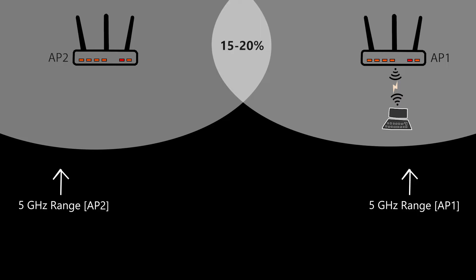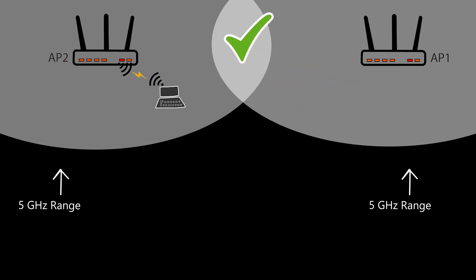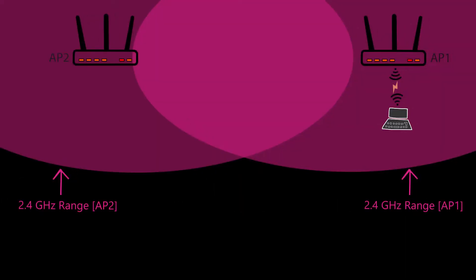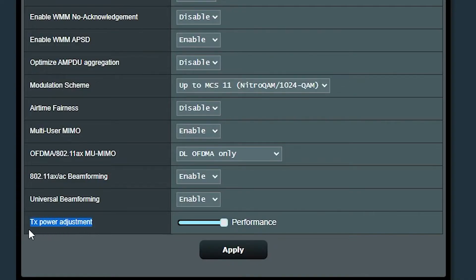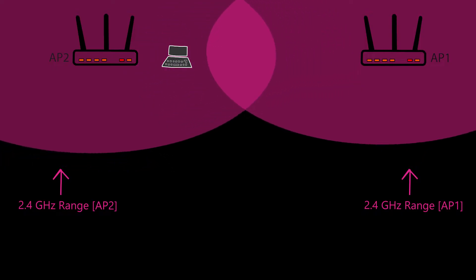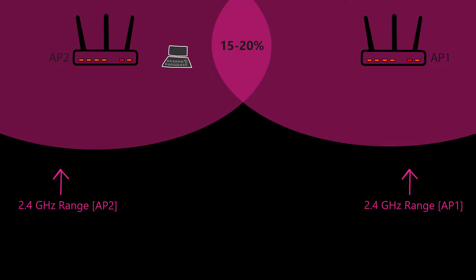Although in this example the 5 GHz wireless networks have a 15 to 20% overlap which seems perfect for seamless roaming, the 2.4 GHz wireless networks are nothing like that and a sticky client issue is very likely to happen. So in this situation, adjusting the transmit power could be helpful — for example, reducing the transmit power for the 2.4 GHz band could actually fix the problem.